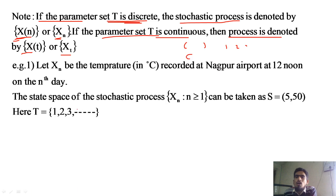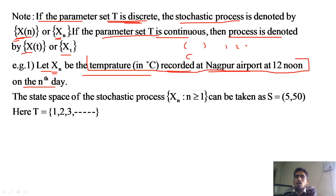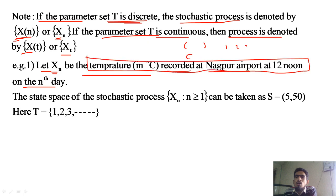Now look at Example 1. Let x(n) denote the temperature in degrees recorded at Nagpur airport at 12 noon on the nth day. So x(n) is the random variable representing temperature recorded at Nagpur airport at 12 noon. The sample space will consist of the possible temperature values.